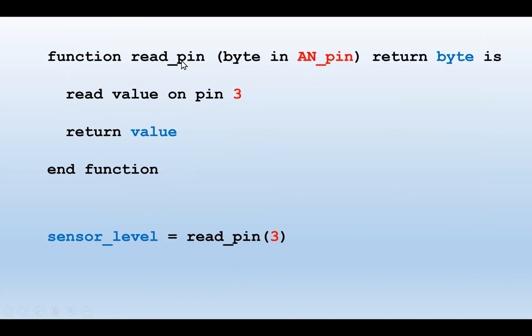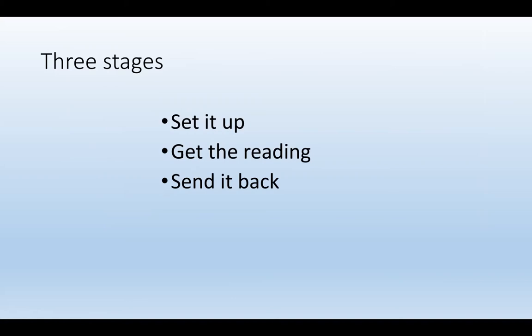Here's the example: we're going to call the function 'read the analog pin,' and we'll return a byte. So we want to find out the level of a value; we say read pin 3, the three goes in, is used, and returned. There are three stages to getting an analog reading: you've got to set up the system for an analog reading, get the reading itself, and then send back the result.